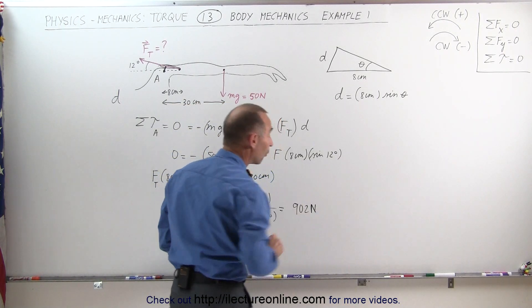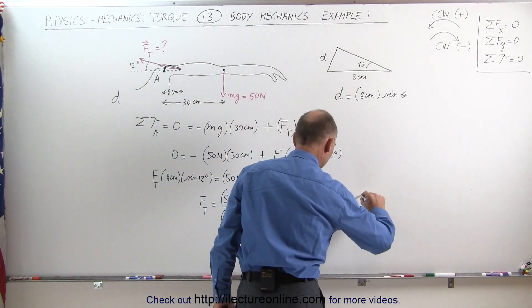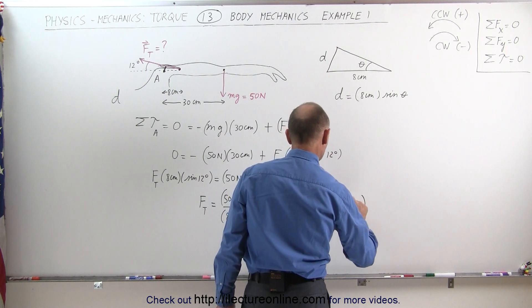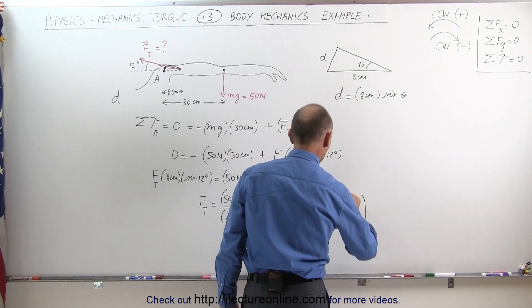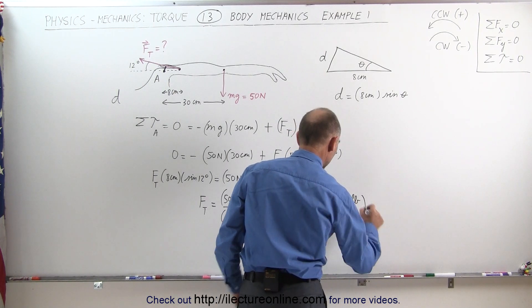902 newtons, that's a lot of force. Now let's convert that to pounds because some of you will understand it better. If we do this in pounds, we need pounds in the numerator and newtons in the denominator. One pound is equivalent to 4.448 newtons.